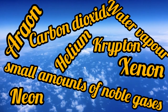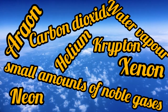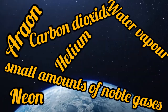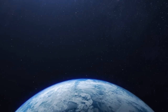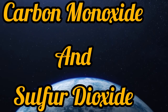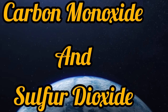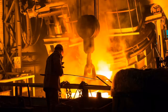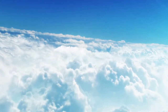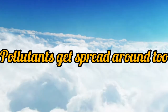The composition of air changes very slightly from day to day and place to place. For example, there is more water vapour in the air around you on a damp day. Pollutants such as carbon monoxide and sulfur dioxide are likely to be given out from busy cities and industrial areas, but since air is continuously on the move, the pollutants get spread around too.